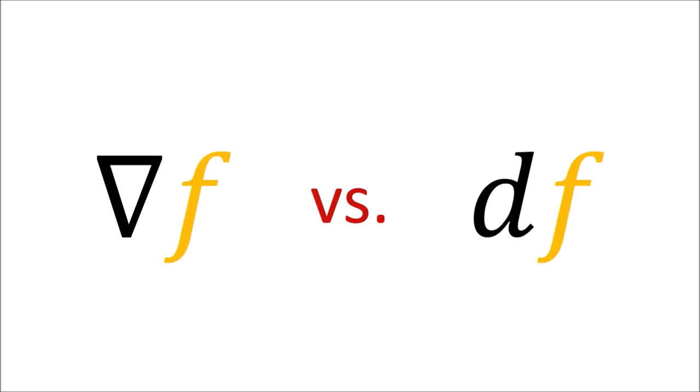In this tensor calculus series I've been talking about two different operators that act on functions. There's the gradient operator, also called the del operator, and there's the d operator. These two operators are highly related but they are technically different, and I'd like to compare and contrast them.